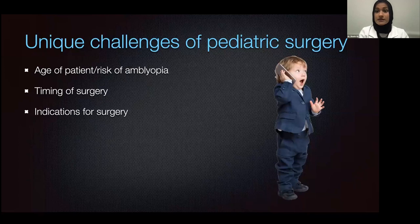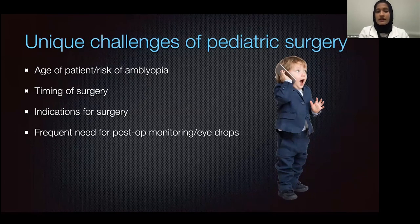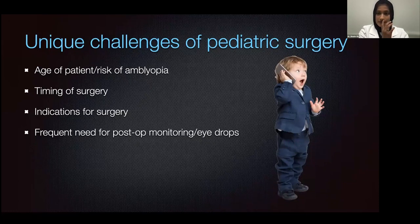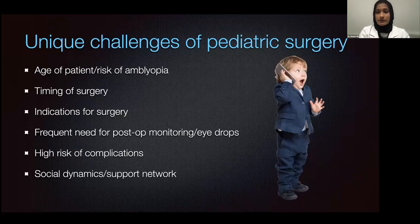The indications for surgery are also extremely different. In adults we're doing penetrating keratoplasty, DSEC/DMEC for things like Fuchs dystrophy, pseudophakic bullous keratopathy, keratoconus, corneal lacerations, and scars from infections, whereas in kids we're looking at congenital diseases — so the indications are quite different and that does make the outcomes very different. These patients need extremely close postoperative monitoring. The eye drops and anti-inflammatory regimen will have an increasingly important impact on their postoperative outcome, and there is an extremely high risk of complications requiring a strong social support network.